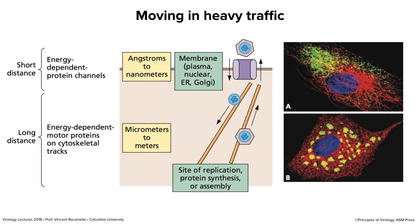In a cell infected with vesicular stomatitis virus, the viral nucleoprotein — shown in yellow — coats the viral RNA. This visualization shows the nucleoprotein going from near the nucleus, stained blue with DAPI dye, all the way to the plasma membrane. Those nucleoprotein-RNA subassemblies, or nucleocapsids, are moving to the plasma membrane from the nucleus via motor transport pathways along the cytoskeleton, stained in red using an antibody to tubulin.